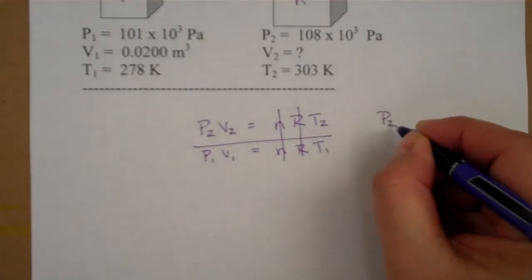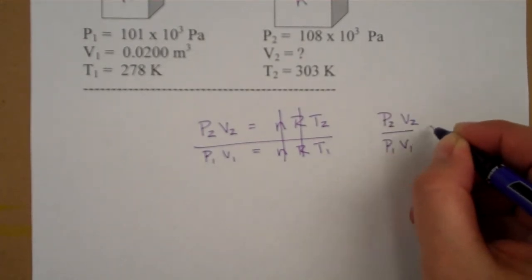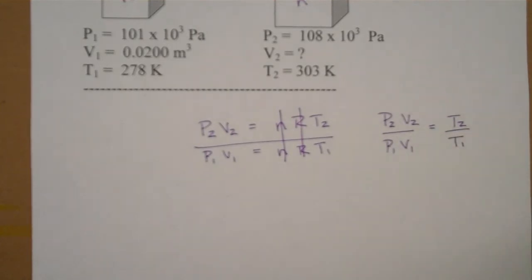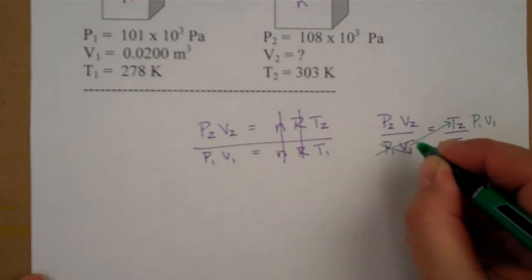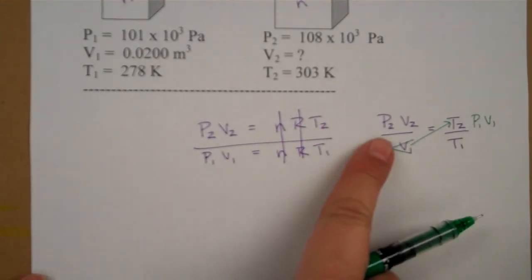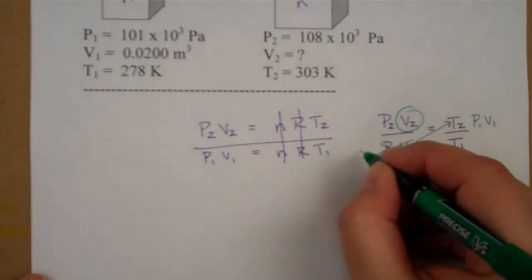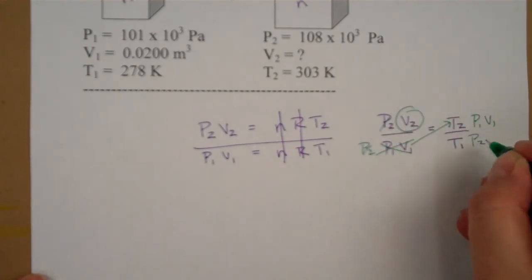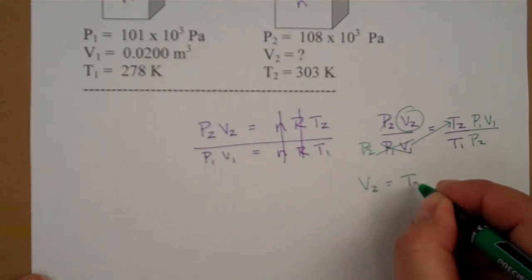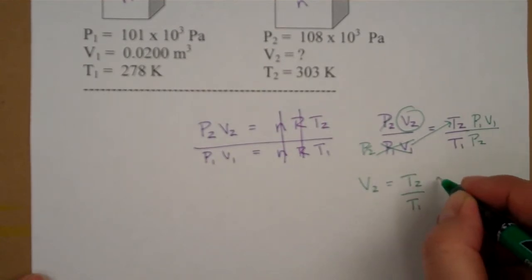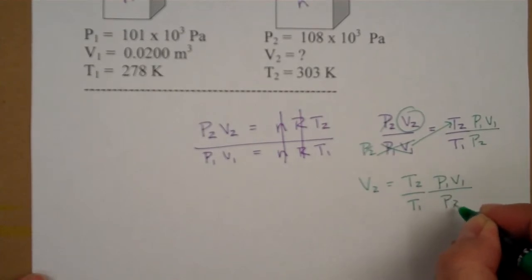So we've got P2V2 over P1V1 equals T2 over T1. I'm going to go ahead and multiply both sides here by P1V1. So I'm going to cross multiply. That'll get rid of that. And then I'm going to divide both sides by P2 to isolate my V2. So writing my equation, V2 is going to be T2 over T1, P1V1 over P2.